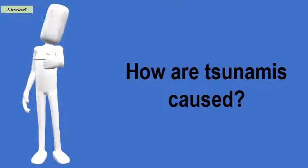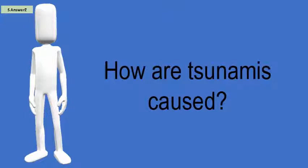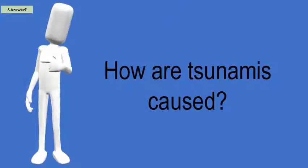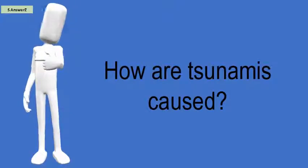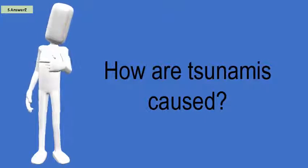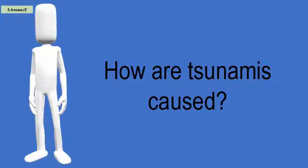How are tsunamis caused? A tsunami is a series of large waves generated by an abrupt movement on the ocean floor that can result from an earthquake, an underwater landslide, a volcanic eruption, or, very rarely, a large meteorite strike.